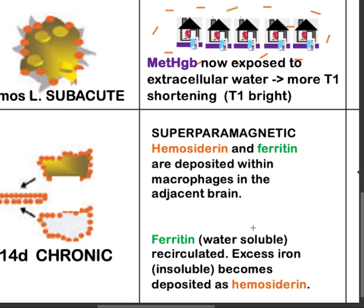In the chronic stage, methemoglobin is consumed by macrophages and turns into hemosiderin and ferritin. Ferritin is water-soluble, while hemosiderin is the insoluble form of iron, and exhibits susceptibility effects rather than dipole-dipole interaction.